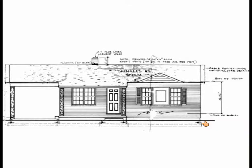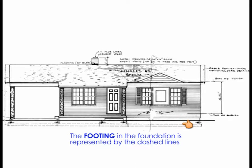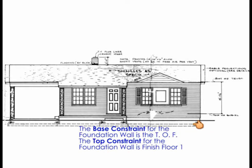According to your front elevation in your construction documents, the foundation wall will go from the top of the footing, which is indicated by the dashed line here, up to the finished floor one.